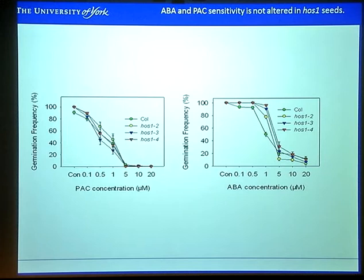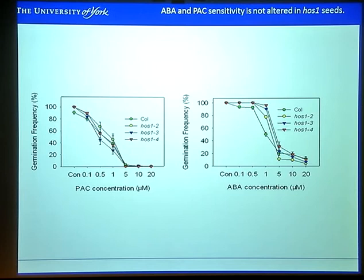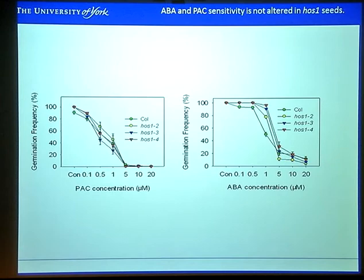ABA and GA are two important hormones in regulating dormancy, so we investigated whether the low dormancy phenotype in HOS1 is due to alterations in sensitivity or synthesis of ABA or GA. Germination was tested in response to increasing concentrations of PAC — a GA biosynthesis inhibitor — and ABA. In general, none of the three HOS1 mutant alleles tested show a particularly more or less sensitive phenotype, suggesting that a defect in GA signalling is not important for the phenotype. Similarly, we see no real difference in ABA response, suggesting that ABA signalling is not responsible either.